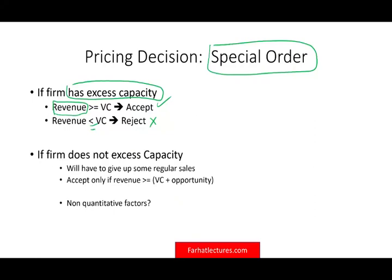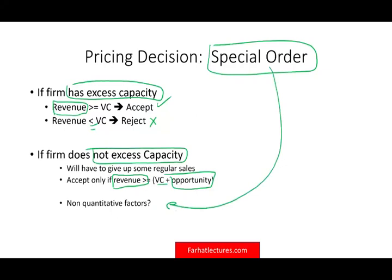If the firm does not have excess capacity, you have to give up some other sales to serve the special order customer due to limited capacity. In that case, accept only if the revenue is greater than the variable cost plus the opportunity cost you are giving up. Also bear in mind that special orders involve non-quantitative factors — such as the importance of entering a new market — that you will need to take into account.